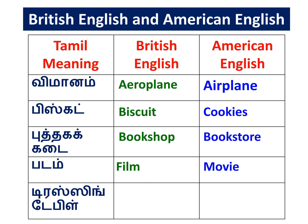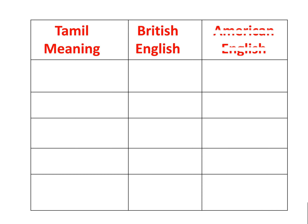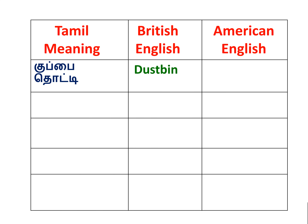Next word is Dressing Table — British English is Dressing Table. American English is Dresser. Next word is Dustbin — American English is Trashbin.